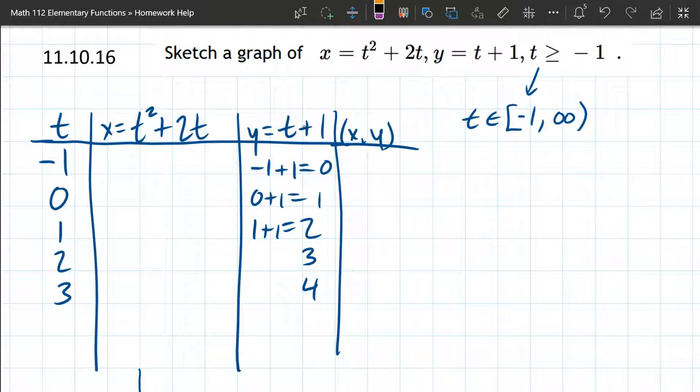I did the y's first because this particular parametric equation is very simple. Just take the t value, add 1 to it. So when t is negative 1, negative 1 plus 1 is 0.